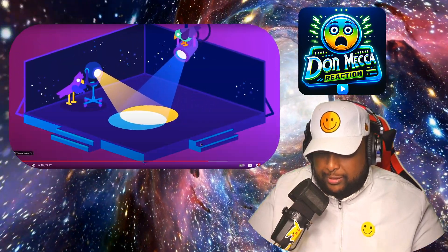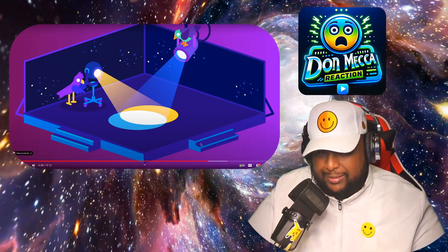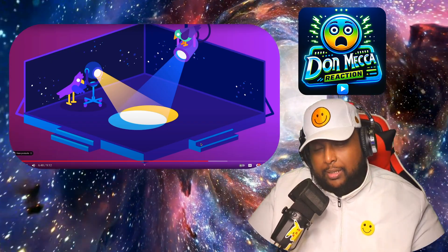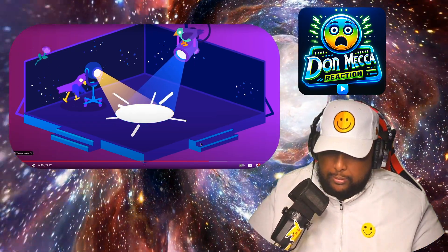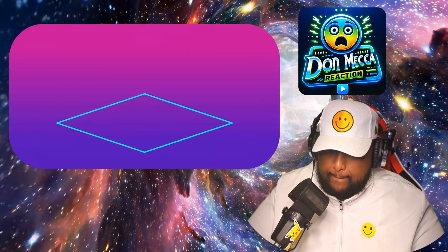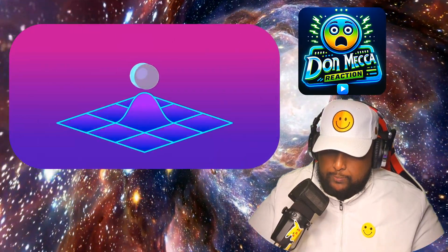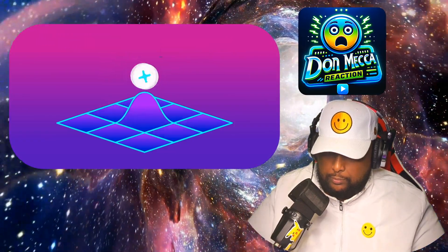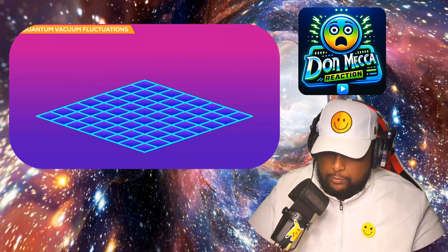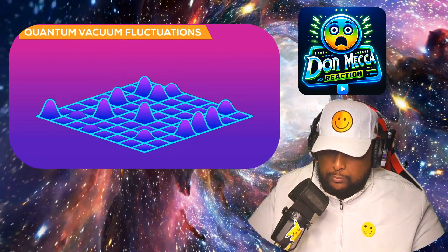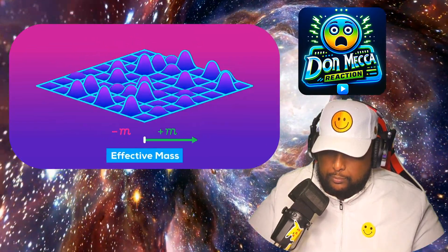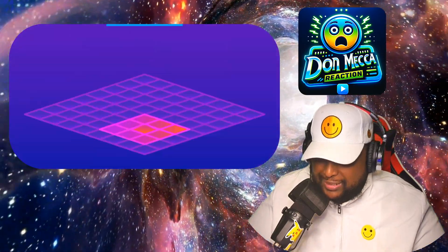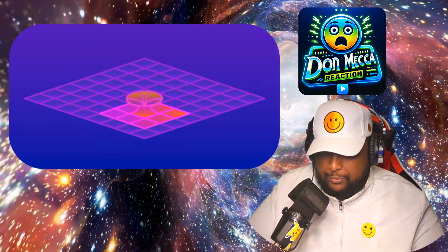We may even have a candidate for this exotic matter: the vacuum of space itself. Quantum fluctuations in empty space are constantly creating pairs of particles and antiparticles, only for them to be annihilated an instant later. The vacuum of space is boiling with them, and we can already manipulate them to produce an effect similar to the negative mass we're looking for — which we could potentially use to stabilize our wormholes.